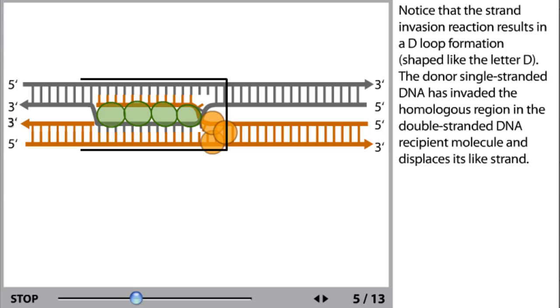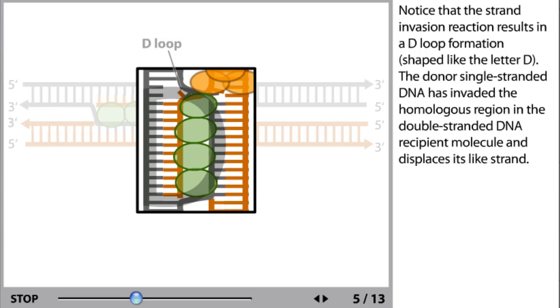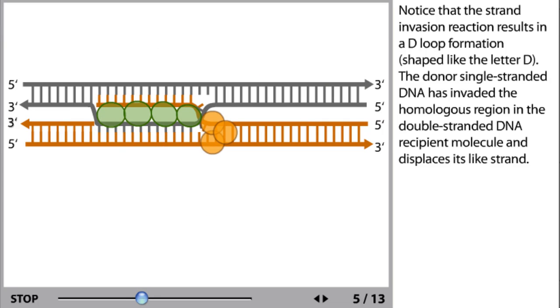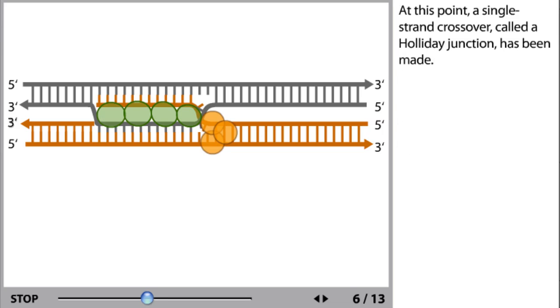Notice that the strand invasion reaction results in a D-loop formation shaped like the letter D. The donor single-stranded DNA has invaded the homologous region in the double-stranded DNA recipient molecule and displaces its like strand. At this point, a single-strand crossover called a Holliday junction has been made.